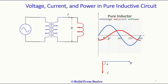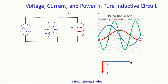Now let's look at the instantaneous power in the inductor. The green waveform is the instantaneous power, and it is the product of voltage and current, measured in volt-amperes. As you can see, the instantaneous power pulsates between identical negative and positive half cycles with double the frequency of the supply voltage. The supply voltage has one complete cycle, but the power waveform has two cycles. The average of this green curve — the power — is zero because it has equal negative and positive half cycles.